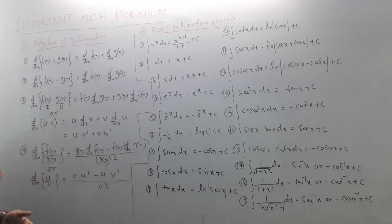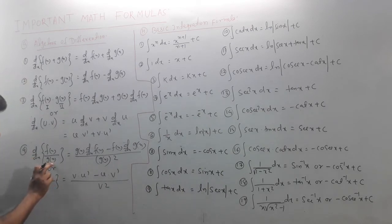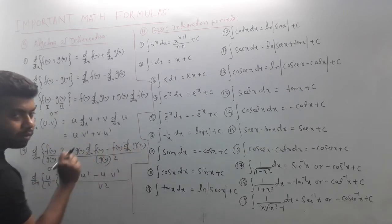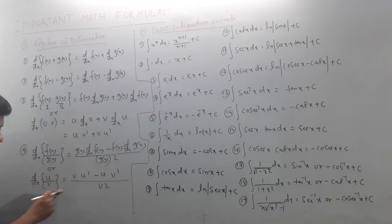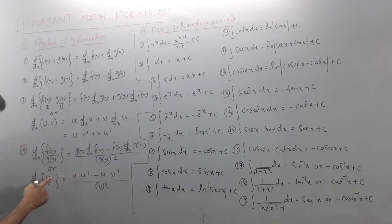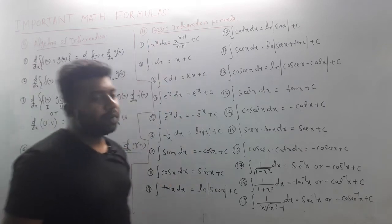For the quotient rule: d/dx of [f(x)/g(x)] = [g(x)·d/dx(f(x)) - f(x)·d/dx(g(x))] / [g(x)]². In u/v form: (v·u' - u·v') / v². In addition to this we have integration formulas — both basic and special formulas.